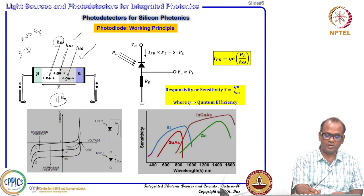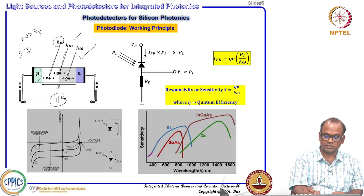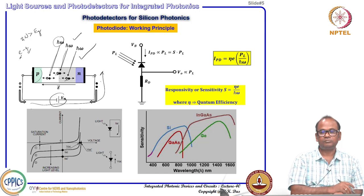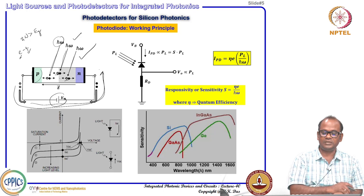Since the built-in electric field is enhanced by reverse bias in the depletion region, this field separates the electron-hole pairs. The electron, being negatively charged, travels against the electric field direction, while the hole, being positively charged, travels along the field direction. The holes move toward the negative terminal of the battery and electrons toward the positive terminal, creating a measurable current flow.